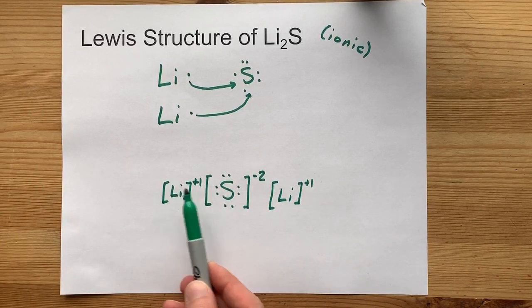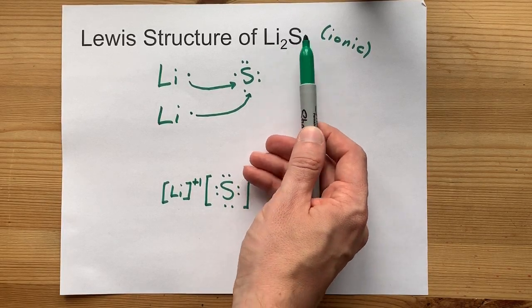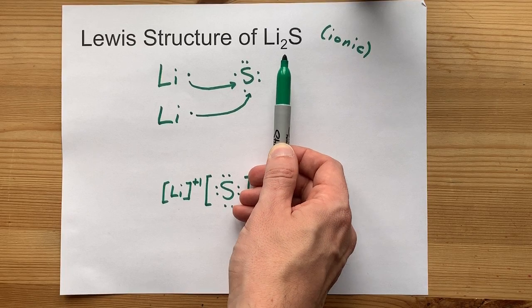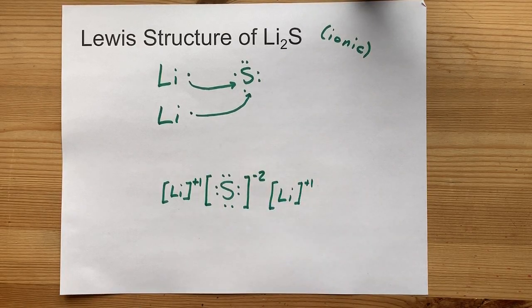You'll notice that we have two lithium atoms and one sulfur. That's why the formula is Li2S. It's saying we need two lithiums to bond with the sulfur.